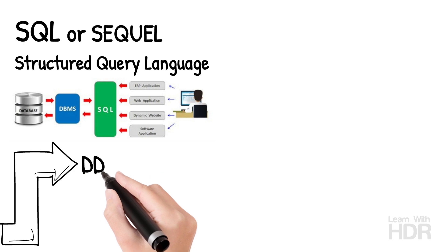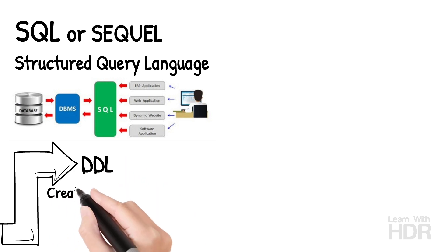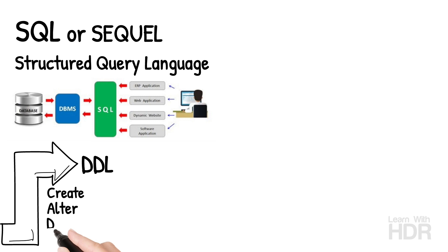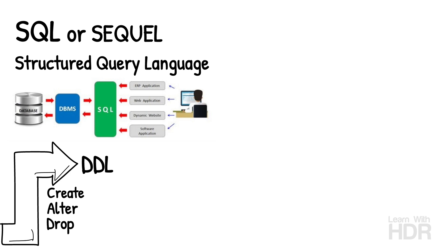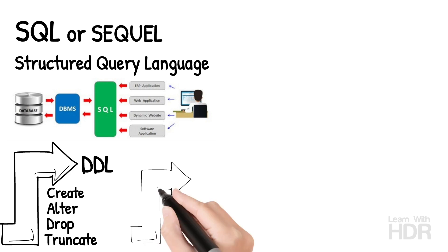We are going to look at SQL query types. Truncate — you can remove all old data from the database using the Truncate command.